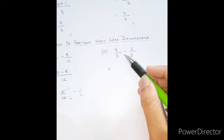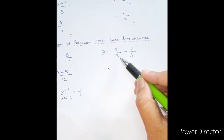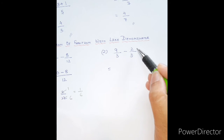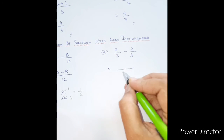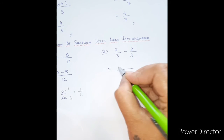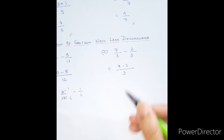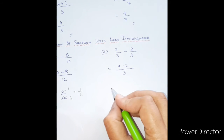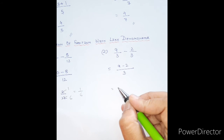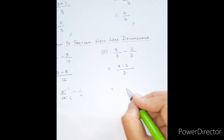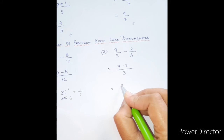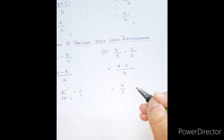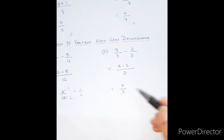In the next example, we have 9 upon 3 minus 2 upon 3. We write the denominator one time and place both numerators on top: 9 minus 2. That gives 7 upon 3. It cannot be further simplified because 7 and 3 are odd numbers and do not appear in each other's multiplication table.